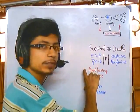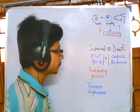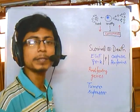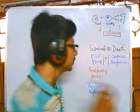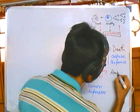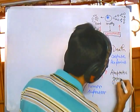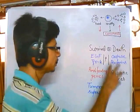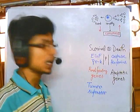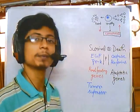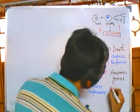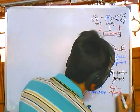For survivability, we have two different types of genes: one positive modulator (proliferating genes) and one negative modulator (tumor suppressor genes). For cell death, we have apoptotic genes — genes that produce products which eventually kill those cells — and also anti-apoptotic genes, which prevent cell death.